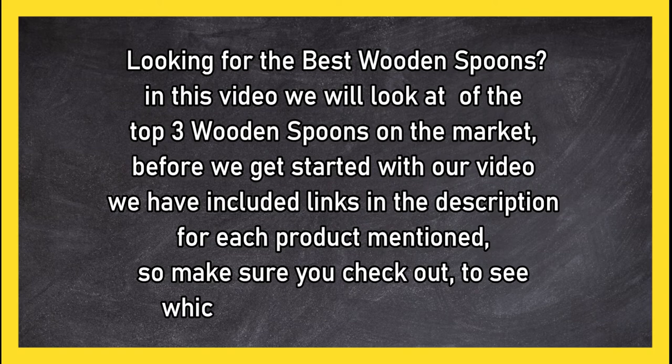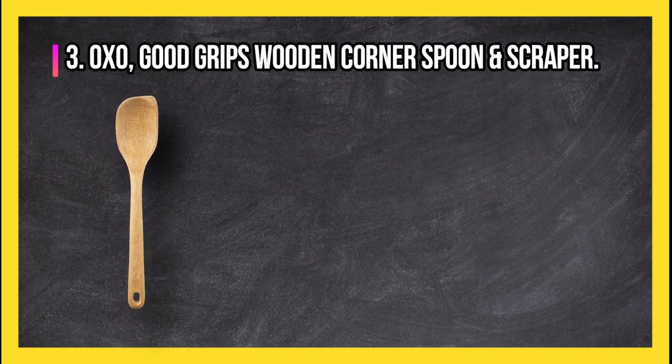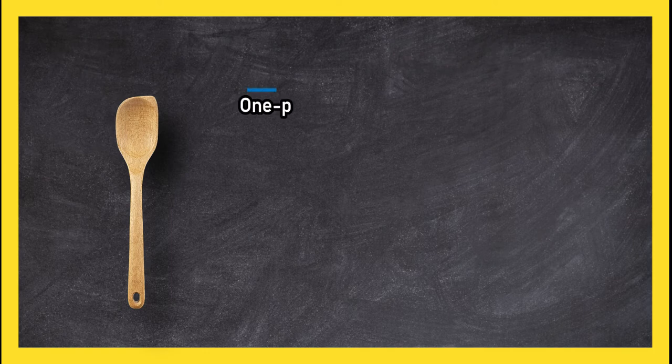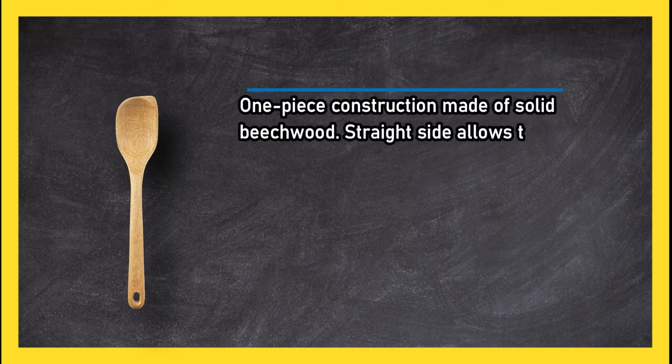So make sure you check out to see which is in your budget range. At number three: Good Grips Wooden Corner Spoon and Scraper. One-piece construction made of solid beech wood. Straight side allows the spoon to reach along the sides and into corners.